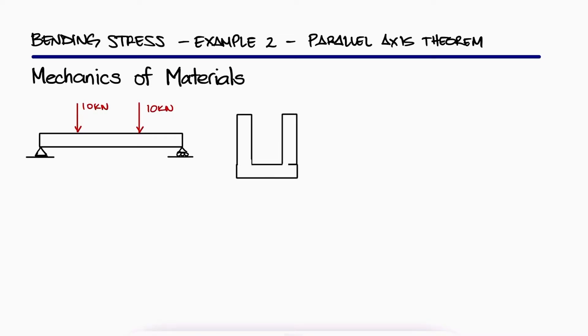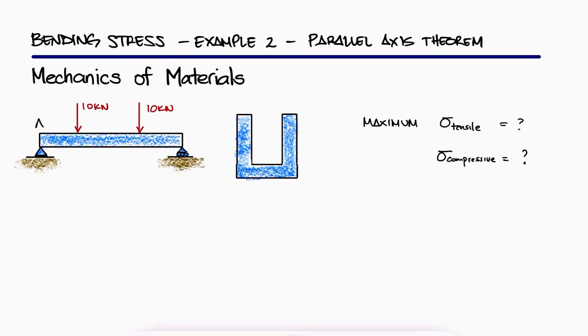Two vertical forces are applied to a beam of the cross section shown. What are the maximum tensile and compressive stresses in portion BC of the beam? This is the second example for the bending stress and parallel axis theorem main video.